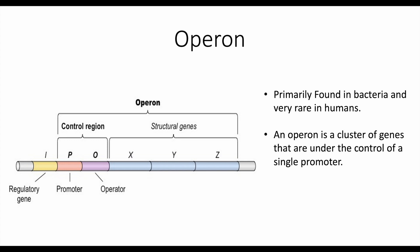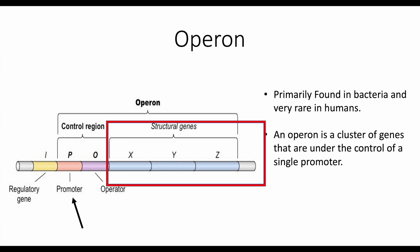An operon. This system is found particularly in bacteria and is very rare in humans, but it often gets confused with a promoter. An operon is specific to a bacterial system — it is a cluster of genes that are under the control of a single promoter. For example, one promoter controls multiple structural genes. It is a much more simplistic transcriptional regulation than is found in eukaryotes.